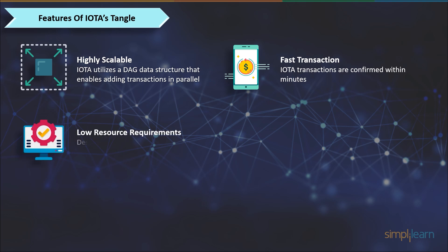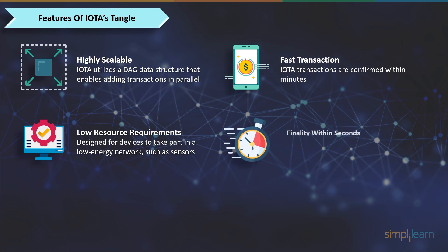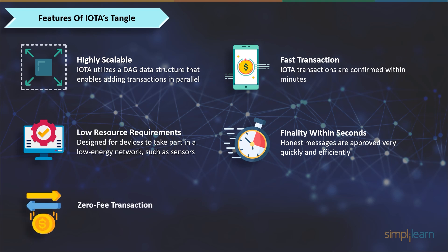Third is low resource requirements. As discussed in this video, IOTA is designed to enable devices to participate in a low energy network, such as sensors. Fourth is finality within seconds — the approval of genuine messages happens extremely swiftly and effectively. Fifth is zero fee transactions. This is the USP of IOTA's Tangle: if it sends one cent, it receives one cent; and if it sends a million dollars, it receives a million dollars.